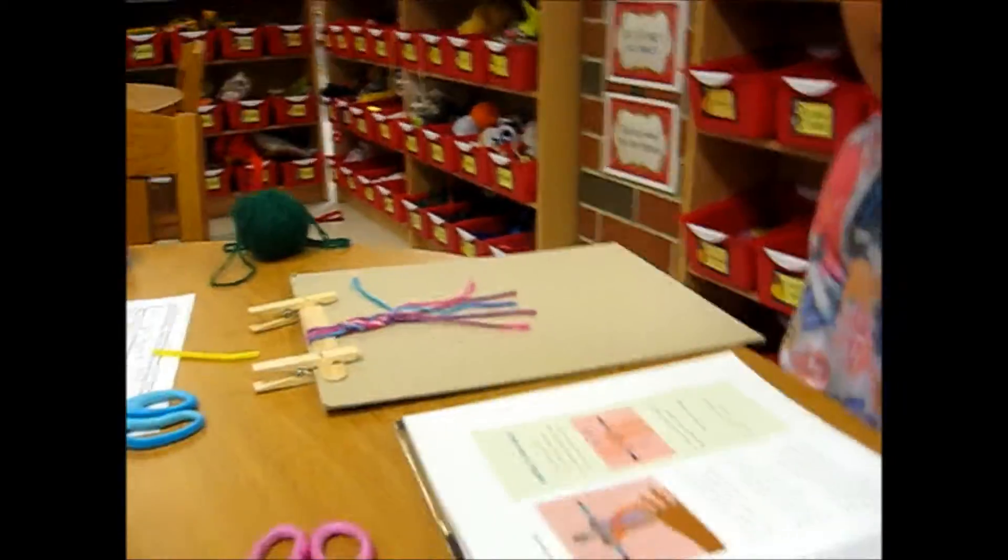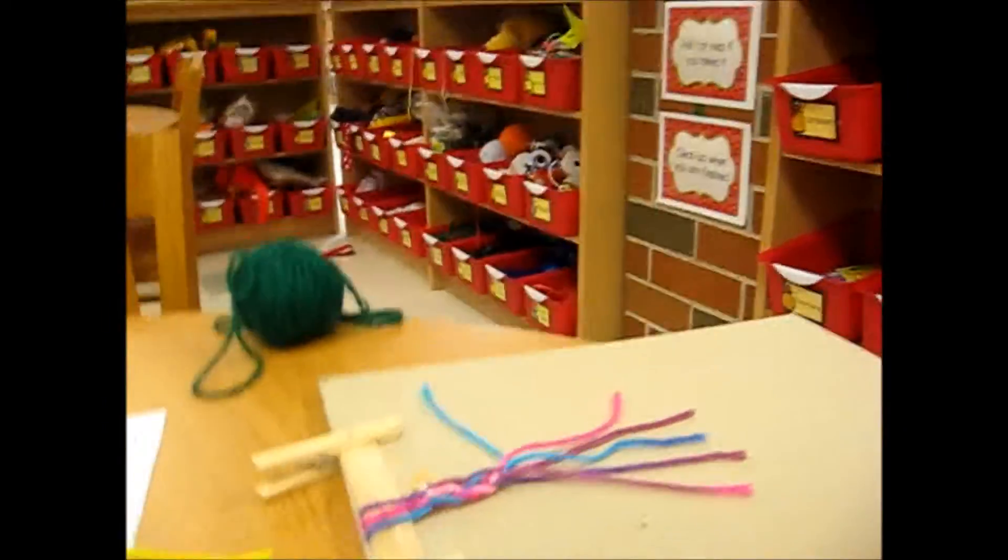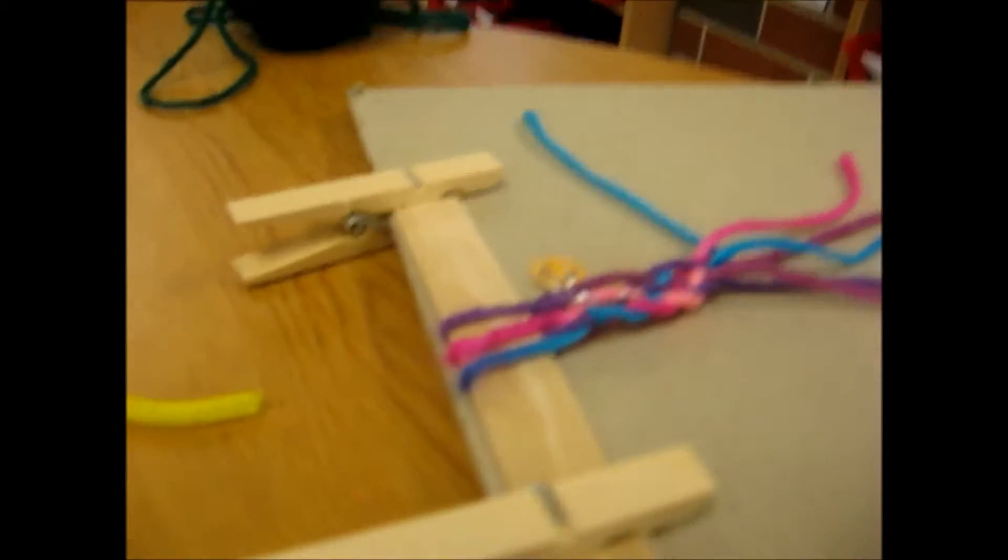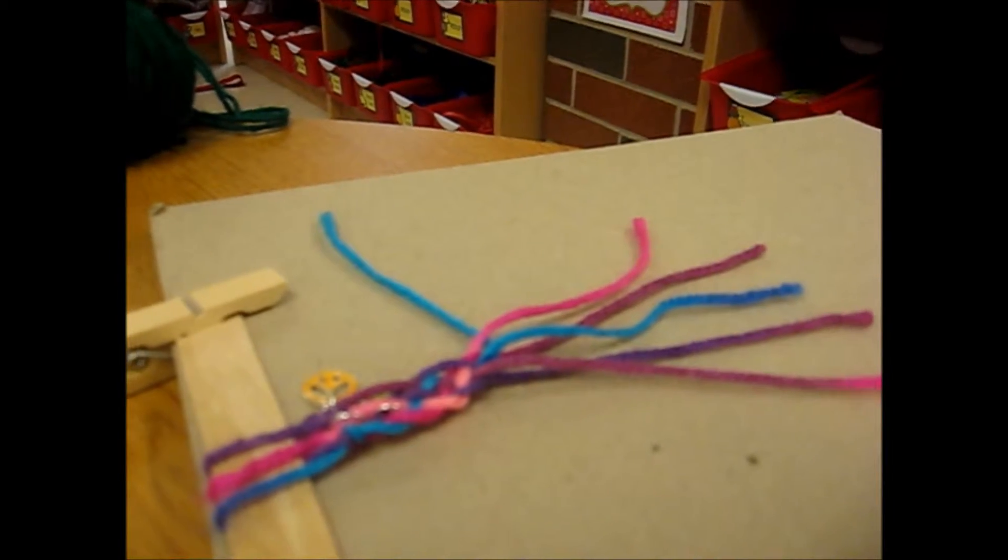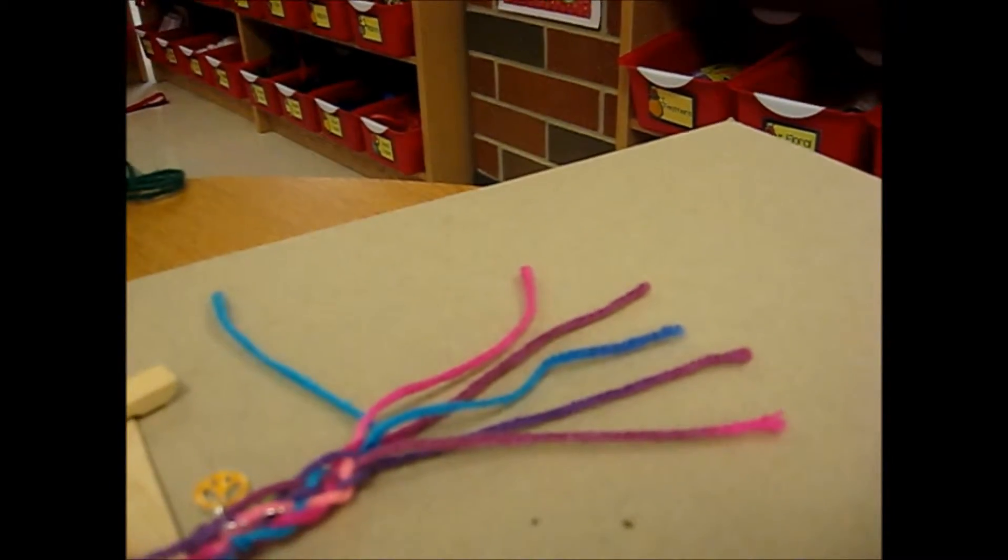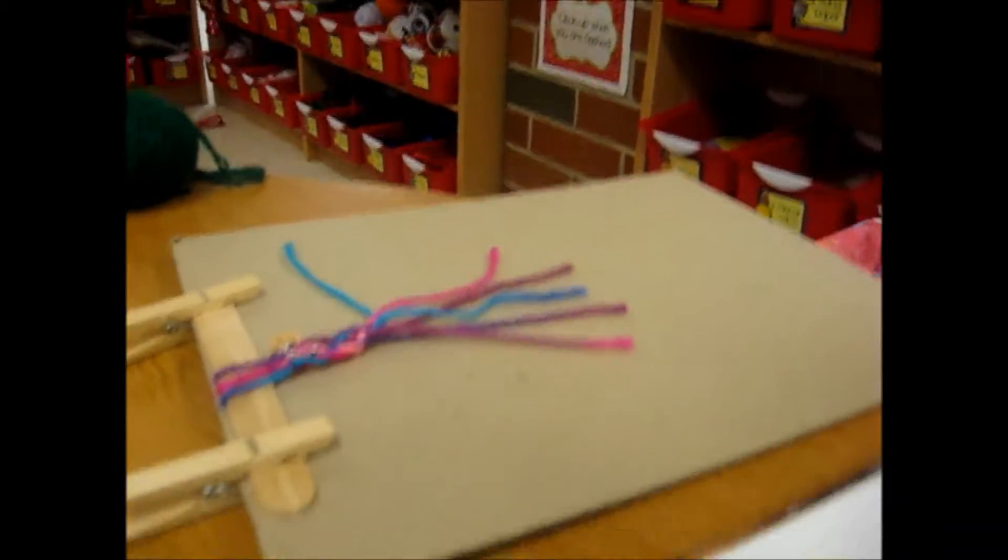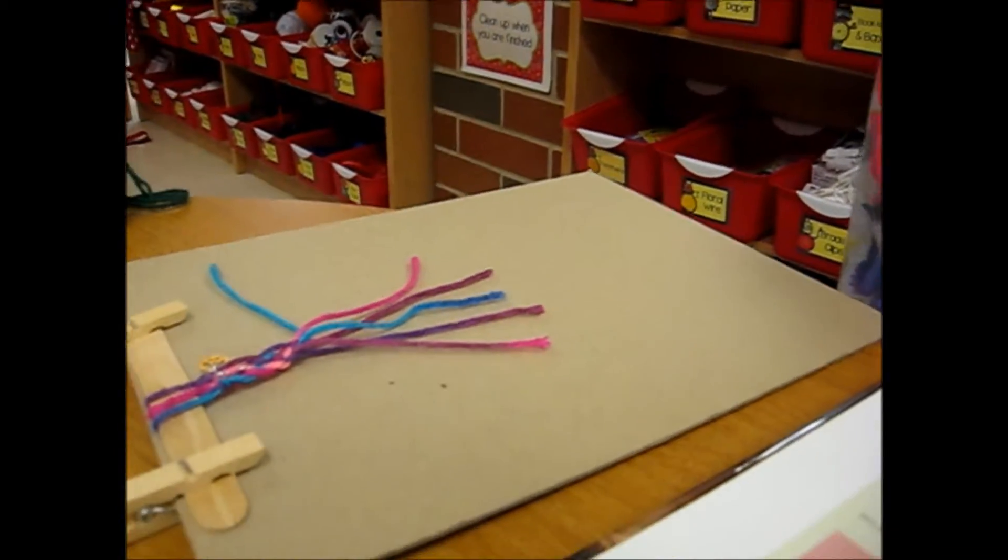But now you are adding something. What are you adding in there? I see some charms. Charms, so it would be like a friendship bracelet. How do you get the charms to stay in there? Do you weave them in somehow? Yes. Wow.